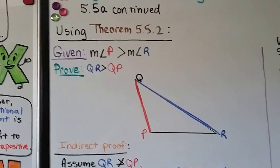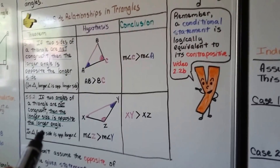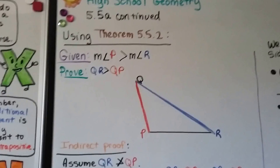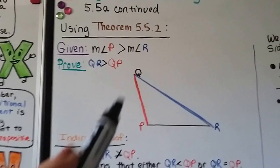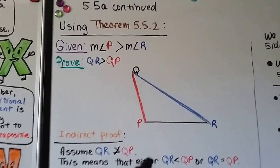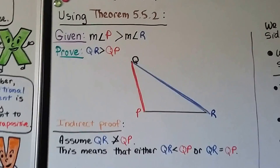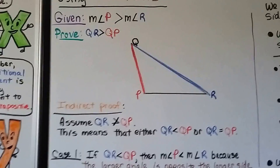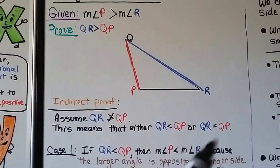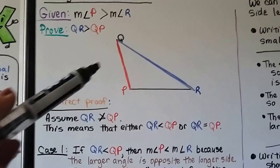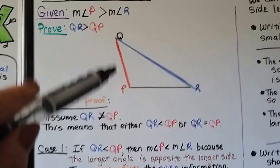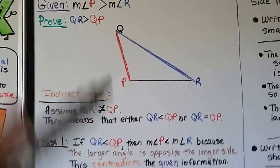Using theorem 5.5.2 — if two angles of a triangle are not congruent, then the longer side is opposite the larger angle — it's given that the measure of angle P is greater than the measure of angle R, and we need to prove that blue QR is greater than red QP. Here's our indirect proof: we're going to assume that QR is not greater than QP. This means it's either less than QP or equal to QP.